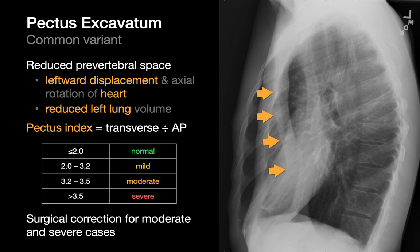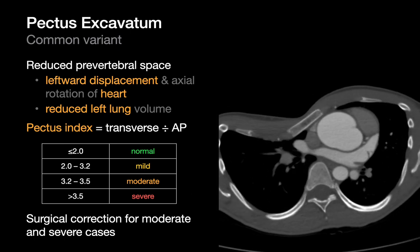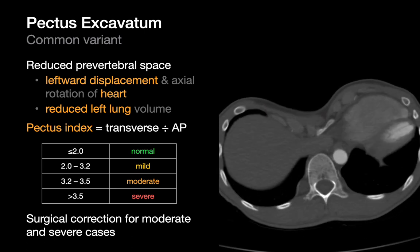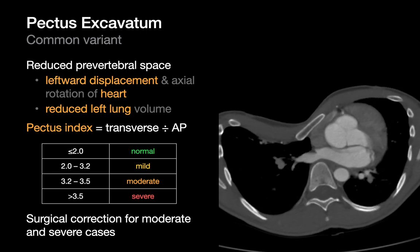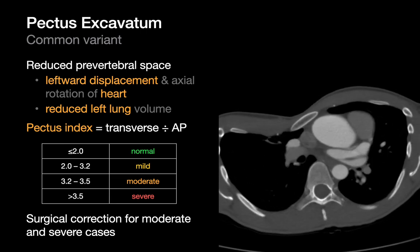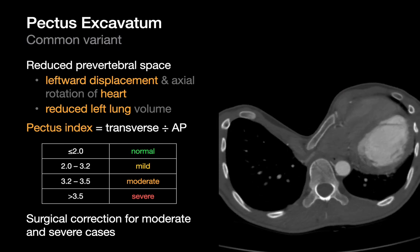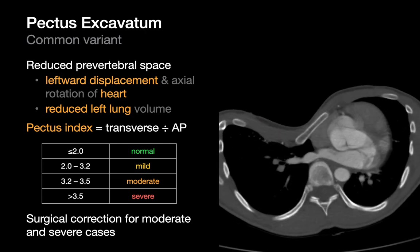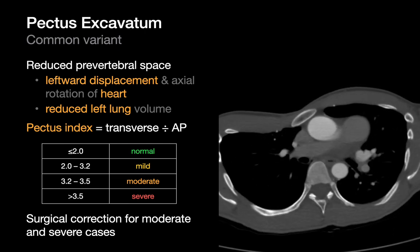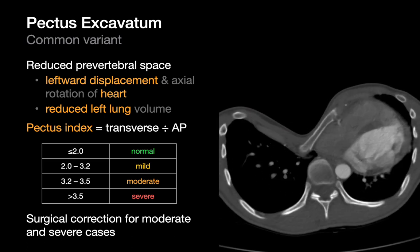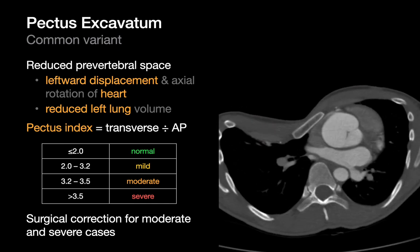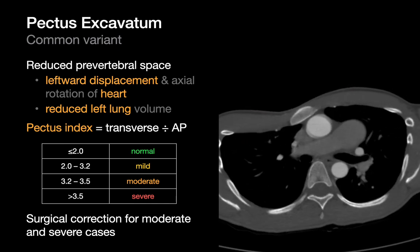This can result in a displaced heart with a somewhat unusual shape on a lateral chest x-ray too, because the heart is displaced into the left hemithorax. In some folks with pectus excavatum the volume of the left lung may also appear reduced. The severity of pectus excavatum is often estimated using the pectus index, which is the transverse diameter of the rib cage divided by its anteroposterior diameter, measured inner surface to inner surface. Moderate and severe cases are often the ones that may require surgical correction.